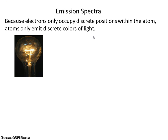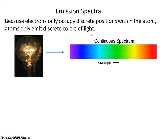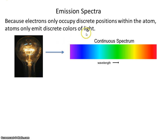In contrast, a light bulb will emit all the colors of light. And when viewed through a prism, you'll see all the colors separated out: red, orange, yellow, green, blue, indigo, and violet. This is called a continuous spectrum — it's when all the colors of light are present.